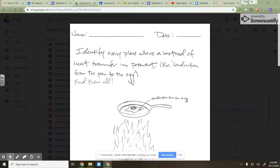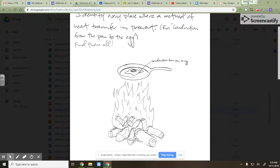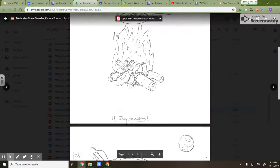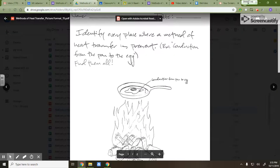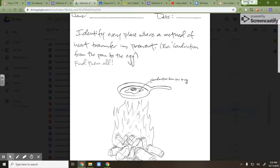You're supposed to identify every place where a method of heat transfer is present in the situation. I gave you an example. I took one of them, I snatched it from you. You're supposed to find 11 instances of heat transfer present in this situation. I took one of them: conduction from pan to egg.